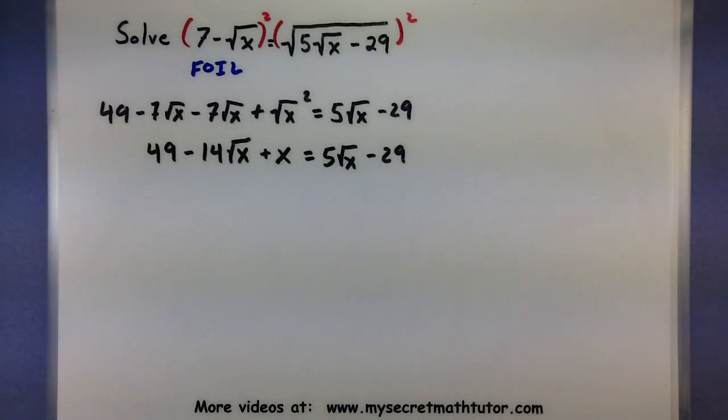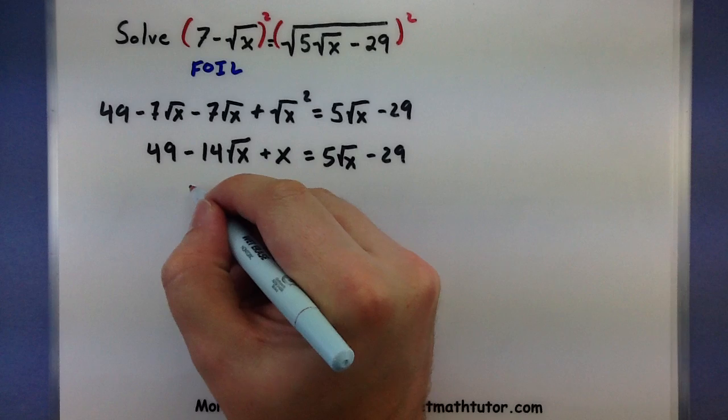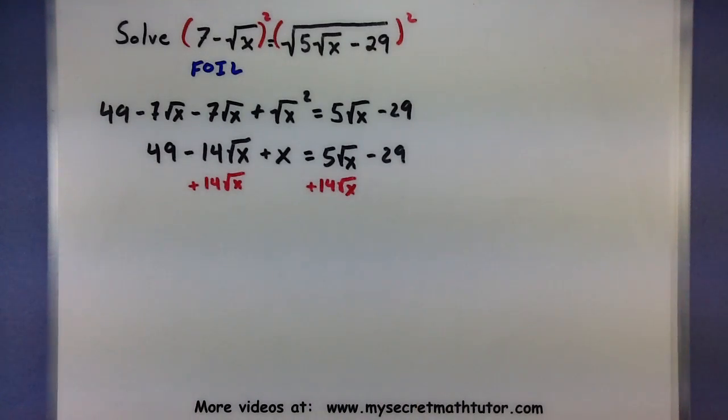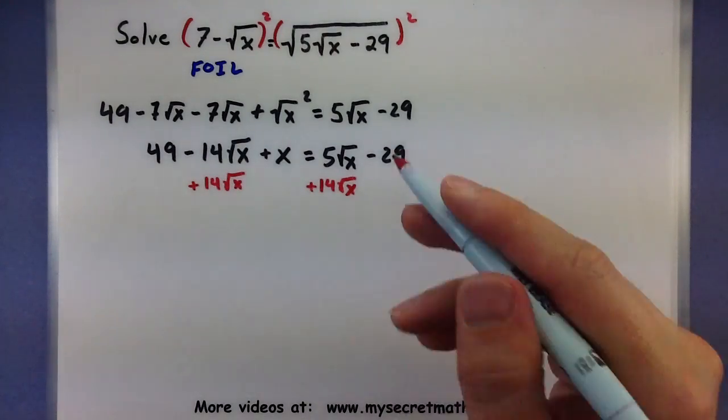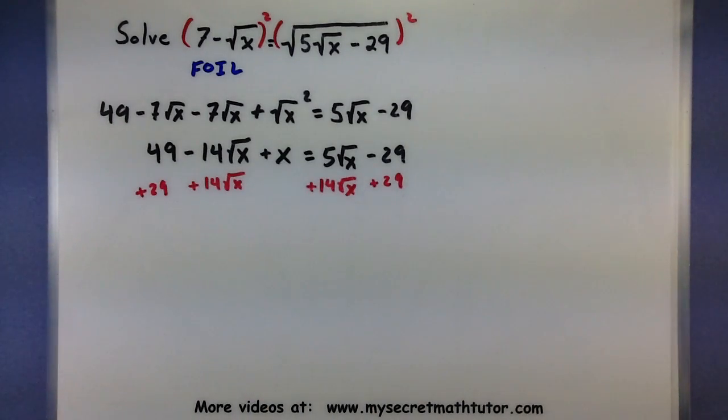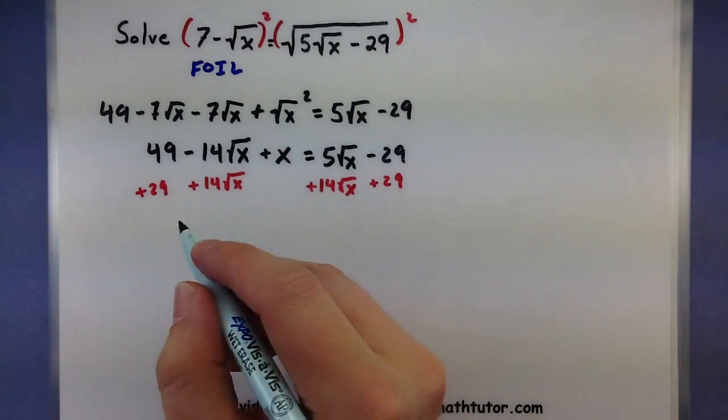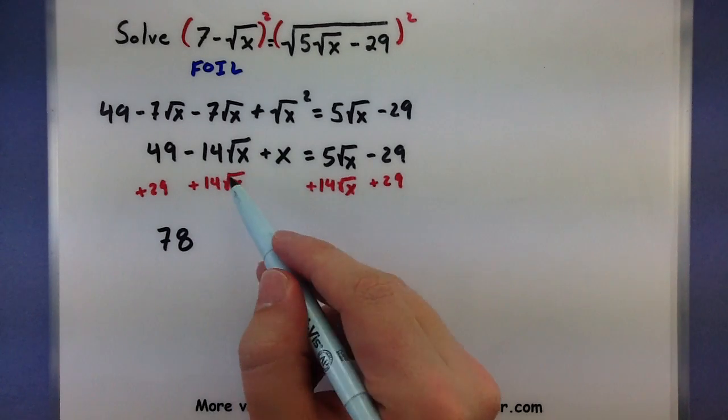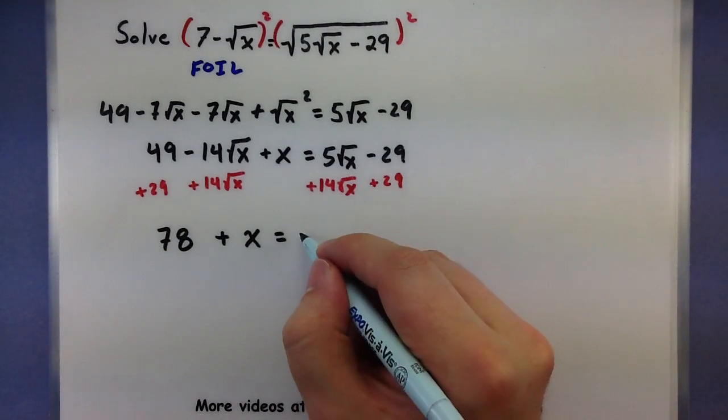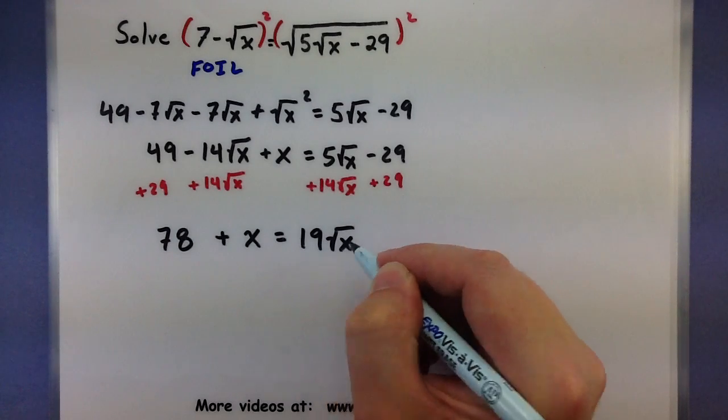Let's see what else we can do with this. Well, no use having my square roots on two different sides. Let's get them on the same side by adding 14 square root of X to the left and the right. Anything else we can... Oh, actually, we can go ahead and move maybe the 29 over. So, plus 29. Plus 29. So, this will give us a 78. These guys will go away. I still have an X. Equals. Now, these two are put together. 19 square root of X.